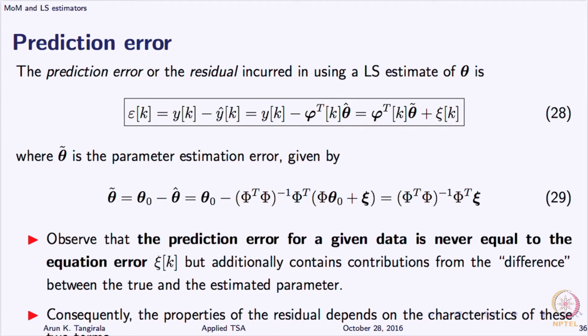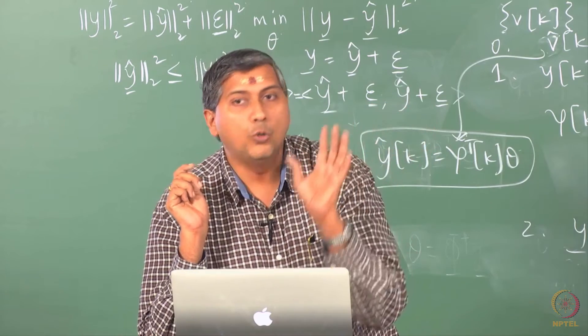What are the two terms? One, so theta naught is the truth which we do not know, theta hat is estimate that we obtain and theta tilde is the error between theta naught and theta hat. Yes, it is true, we do not know theta tilde in reality, it is only theoretical analysis. So you can see epsilon is made up of two terms, one coming as a contribution from the error in your estimate and the other coming from your ZK which is in your DGP. Always your residual will have these two terms.